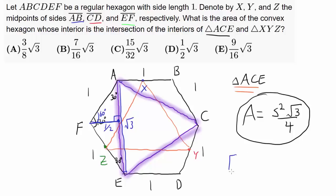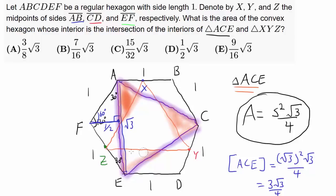So the area of triangle ACE is side length squared — (√3)² = 3 — times square root of 3 over 4, giving 3√3/4. Now we need the area of one of the tiny triangles. Since we have an equilateral triangle, this angle is 60 degrees. By symmetry, this angle is 30 degrees. And since that's an equilateral triangle, the angle there is 60 degrees — so this angle is also 60, and this angle is 90 degrees. We have another 30-60-90 triangle.